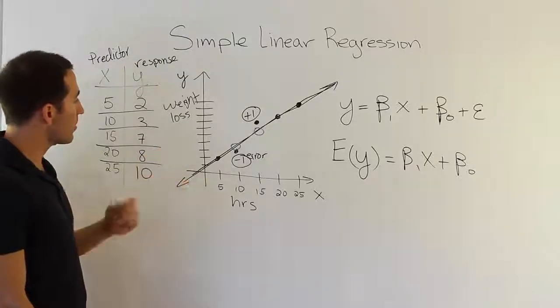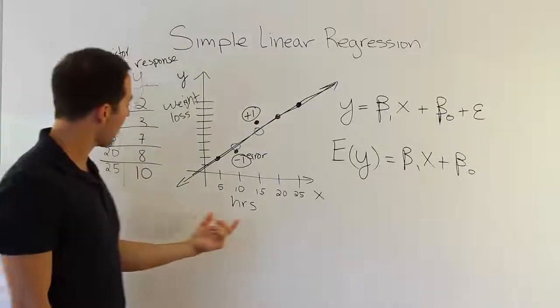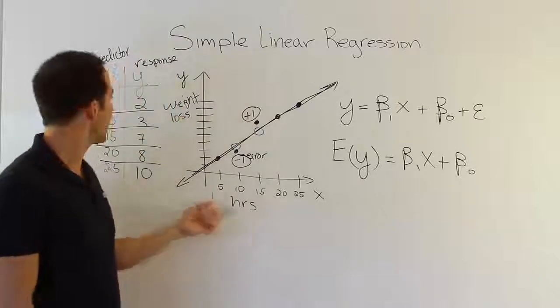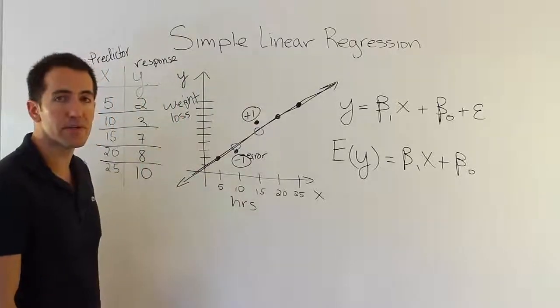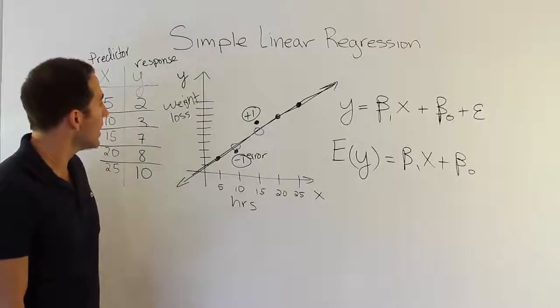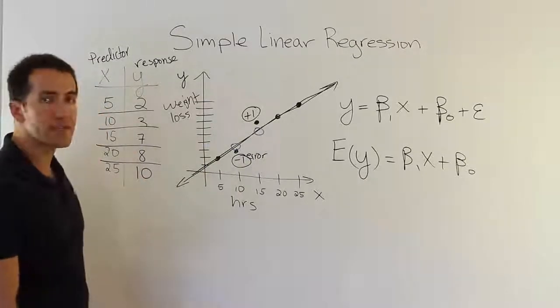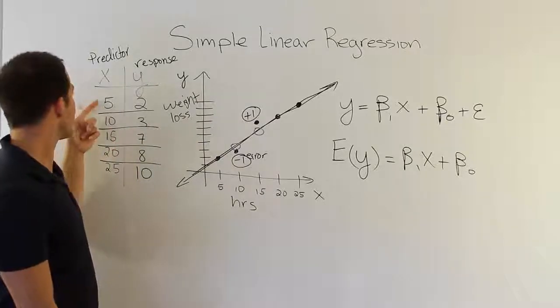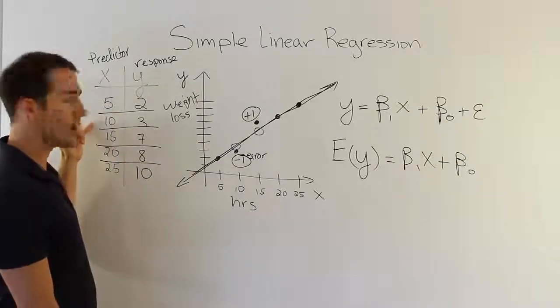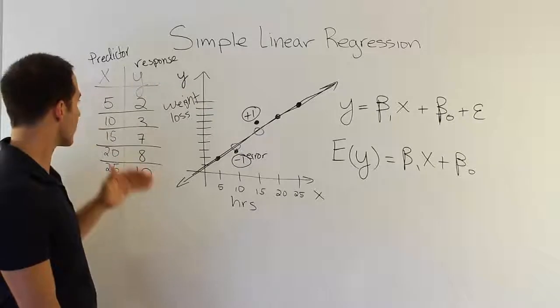So the example problem I put on the board here relates to hours spent in the gym on a treadmill and the weight loss achieved by those subjects who spent that time in the gym. I imagined that I collected five subjects and got their information. Five hours in the gym, two pounds of weight loss, ten hours in the gym, three pounds of weight loss, so on and so forth.